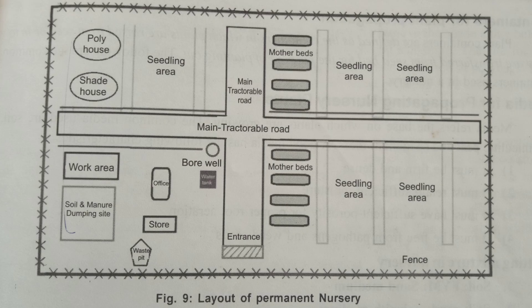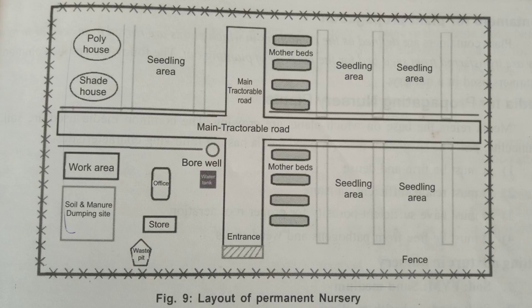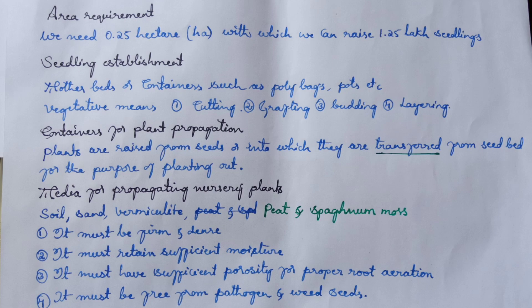This is the layout of a permanent nursery. The nursery is laid out with the following components: fence, office room, store room, water source, mist tent, plant house, nursery yard, working space, waste pit, footpath, road, and entrance. For area requirement, we need about 0.25 hectare, with which we can raise 1.25 lakh seedlings.